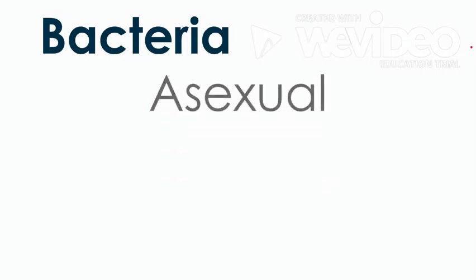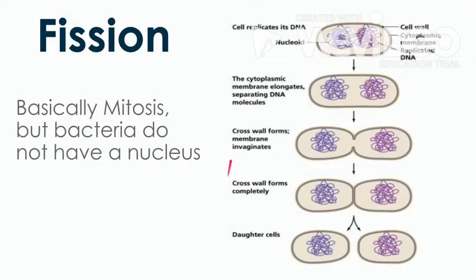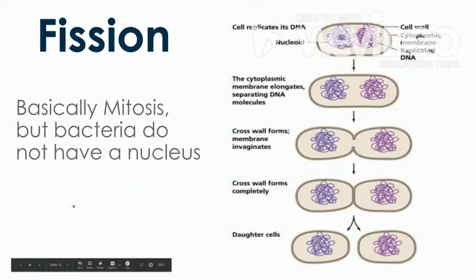Back to the lesson. Bacteria — do you think they reproduce sexually or asexually? Bacteria are strictly asexual, and they use a thing called fission, specifically binary fission. You may have heard of nuclear fission — fission basically just means cutting something in half. Nuclear fission is when you split the nucleus of an atom. So bacterial fission is splitting a bacteria in half. It's when a single-celled organism divides into two identical daughter organisms. It's very similar to mitosis — making two cells out of one — but bacterial cells are a little different from eukaryotic cells, so they have a slightly different process.